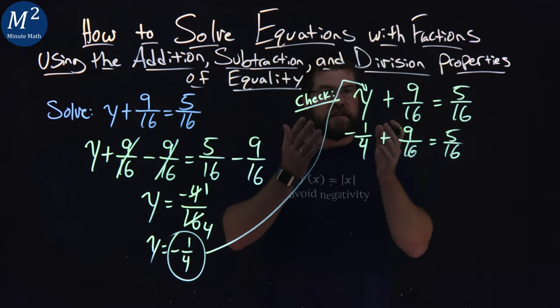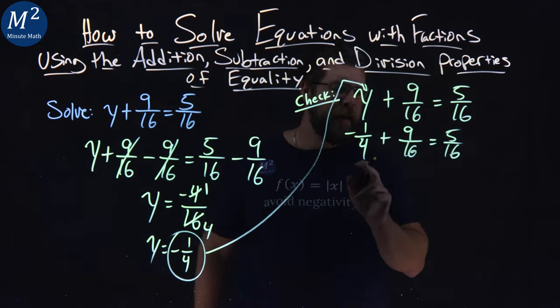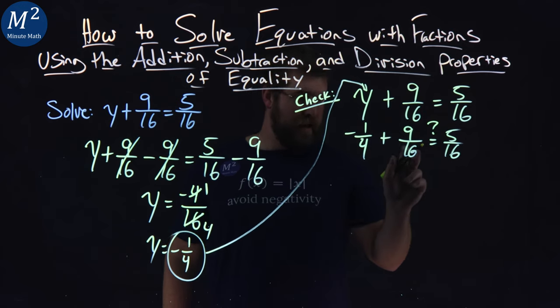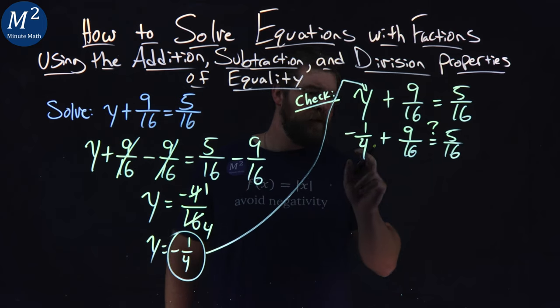From there, we want to simplify the left and right-hand side. Now, we need a common denominator for these two fractions, negative 1 4th and 9 16ths.